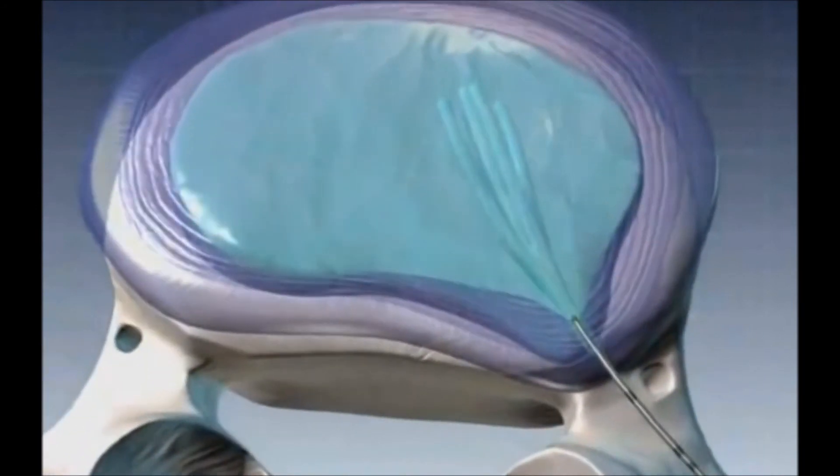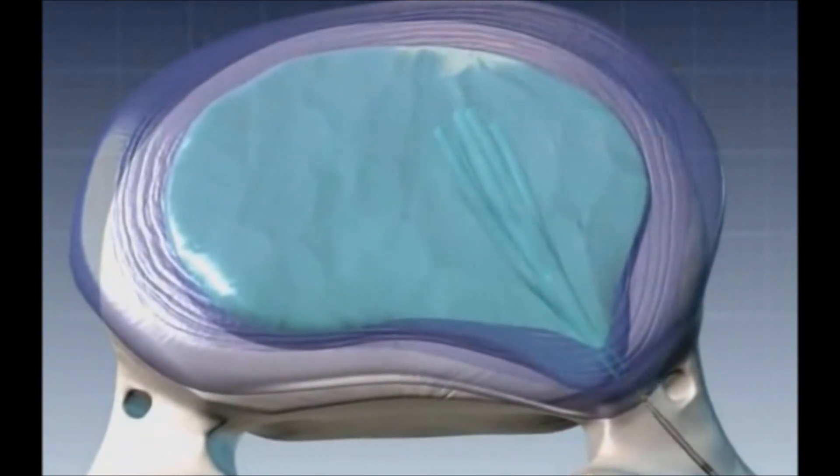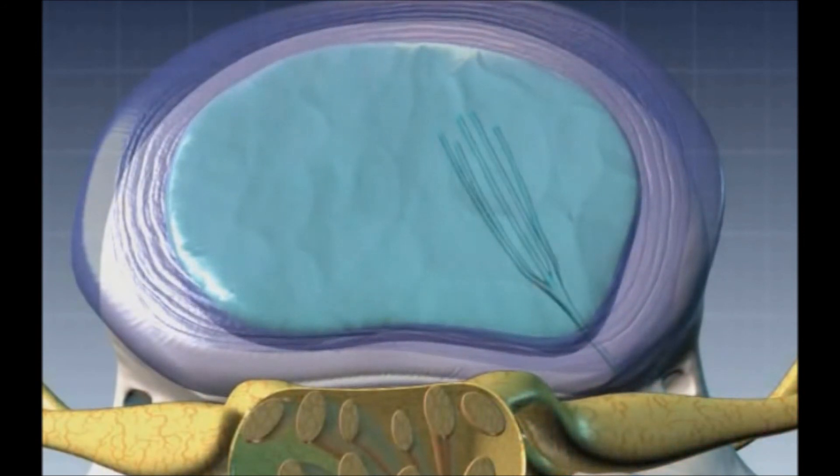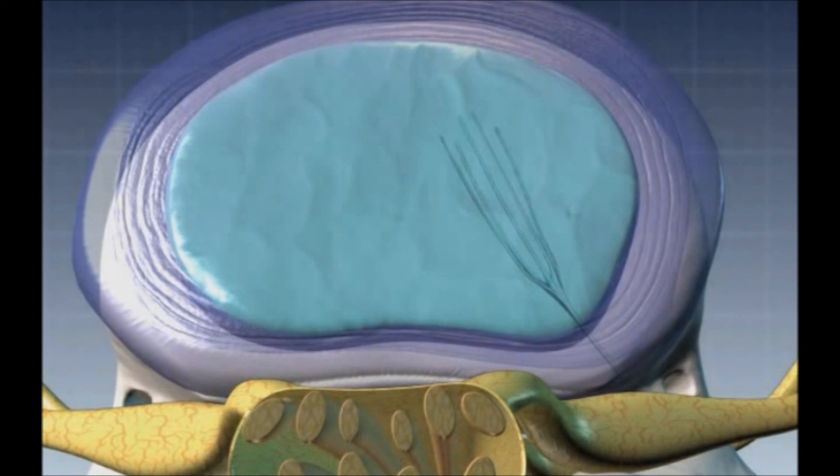When the injection procedure is complete, the transmitter is withdrawn. The removal of nucleus tissue relieves pressure on the disc shell, typically allowing the bulge to recede.